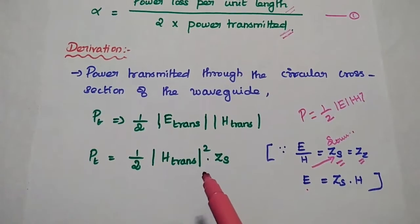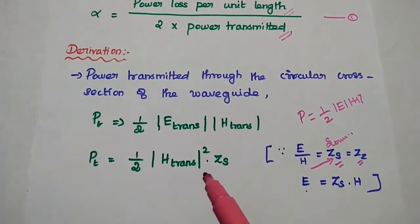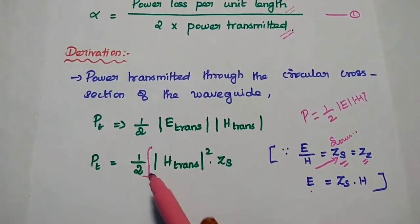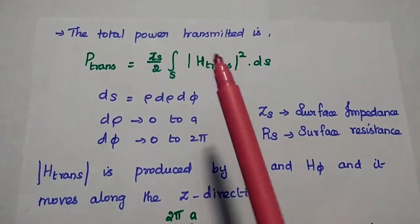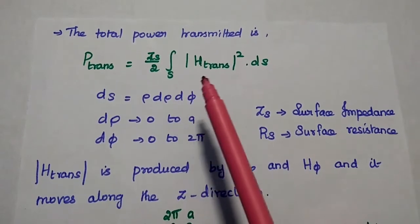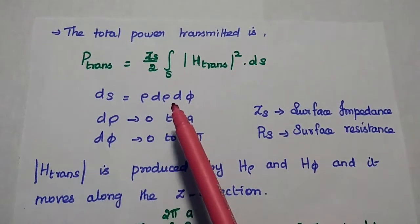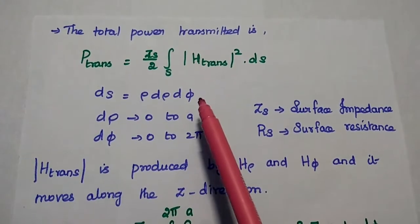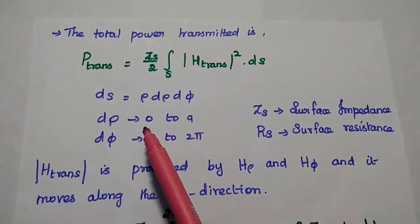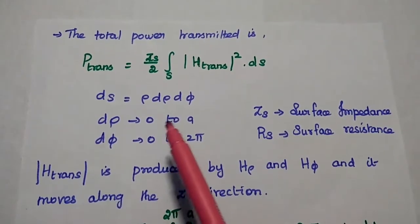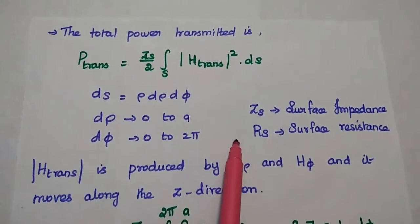This is the transmitted power through the cross section of the waveguide. To find the total power transmitted, we take the surface integral over this value. The total power transmitted is given as ZS/2 times the surface integral of the transmitted magnetic field squared dS, where dS equals rho d_rho d_phi. This is the surface integration for cylindrical coordinate system. Here d_rho has limits from 0 to A, and d_phi from 0 to 2pi. ZS is the surface impedance and RS represents surface resistance.